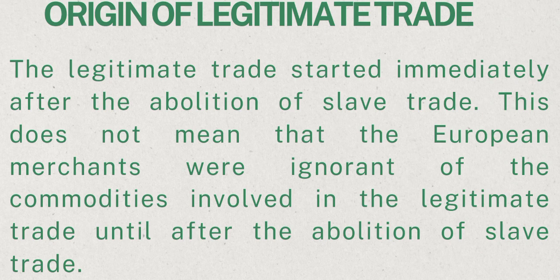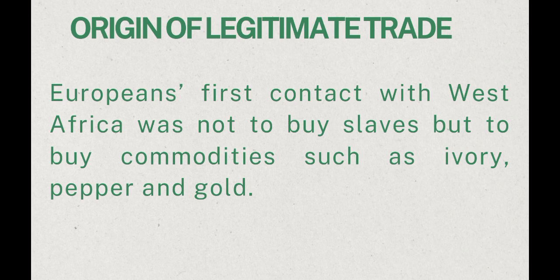The legitimate trade started immediately after the abolition of slave trade. This does not mean that European merchants were ignorant of the commodities involved until after the abolition. In fact, Europeans' first contact with West Africa was not to buy slaves, but to buy commodities such as ivory, pepper, and gold.